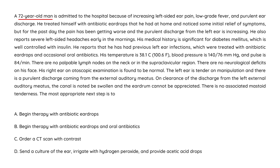Clinical vignette 2: A 72-year-old man is admitted for increasing left-sided ear pain, low-grade fever, and purulent ear discharge. He treated himself with antibiotic ear drops with some initial relief, but over the past day the pain has worsened and the discharge is increasing. He also reports severe left-sided headaches in the mornings. Past medical history is significant for diabetes, well controlled with insulin. Temperature is 38.1, blood pressure 140/76, pulse 84. No palpable lymph nodes and no neurological deficits on the face.